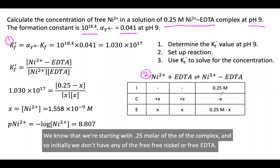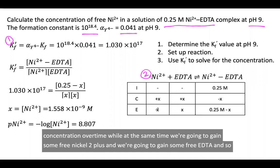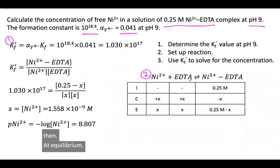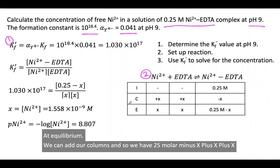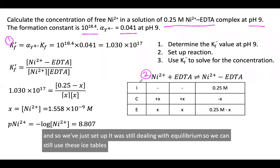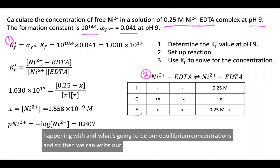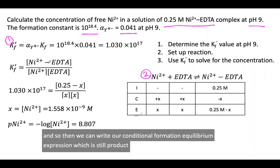Over time, some of the complex is going to break apart and we're going to lose some of this concentration, while at the same time we're going to gain some free Ni2+ and free EDTA. At equilibrium, we can add our columns, so we have 0.25 molar minus X, plus X, plus X. We're still dealing with equilibrium, so we can use these ICE tables to talk about what's happening initially, what's changing, and what's going to be our equilibrium concentrations.